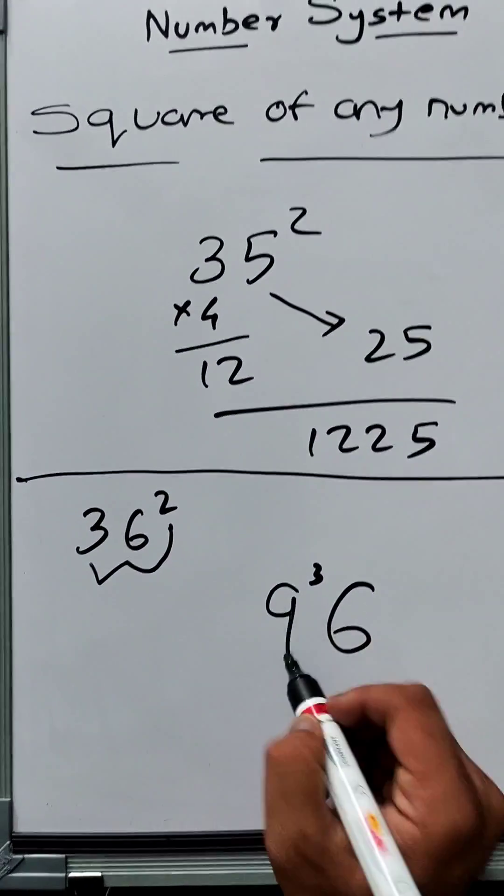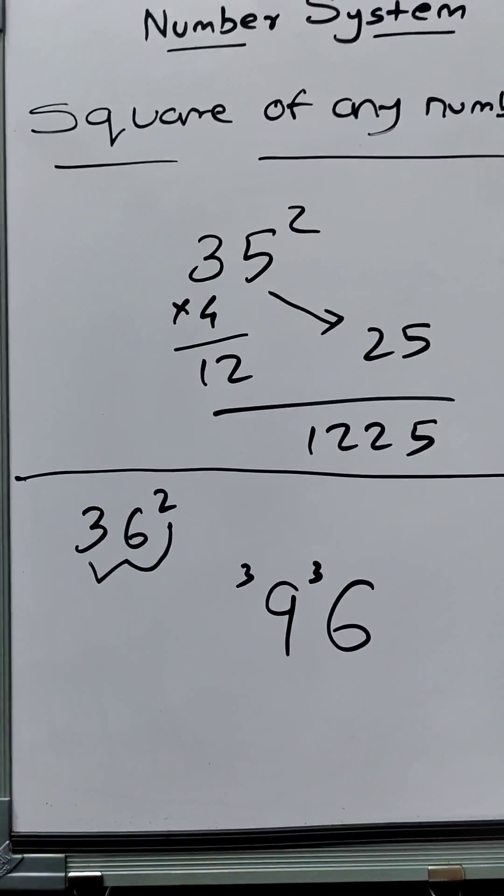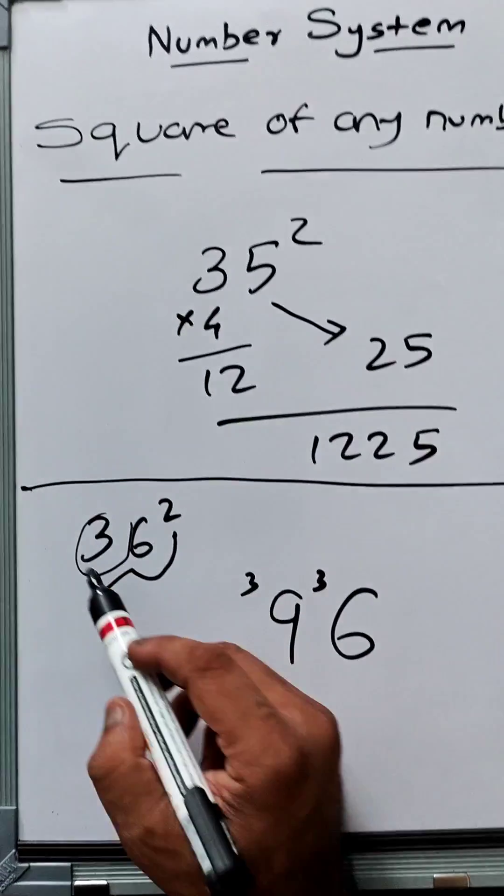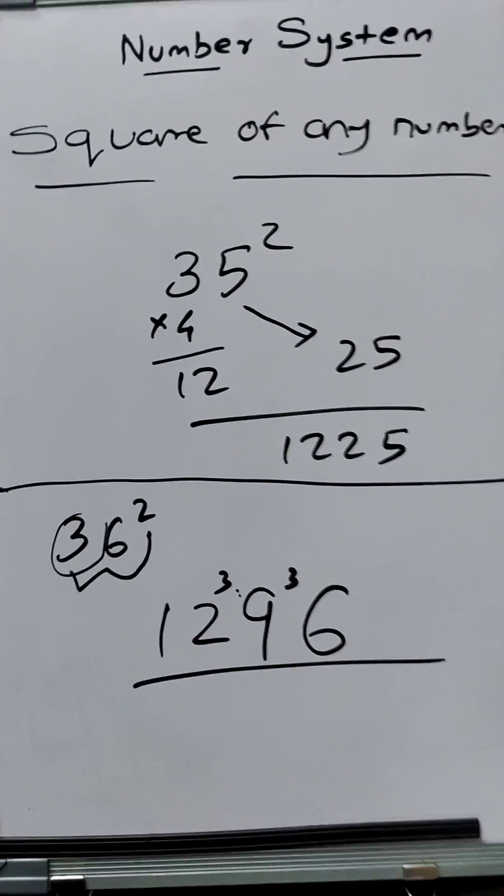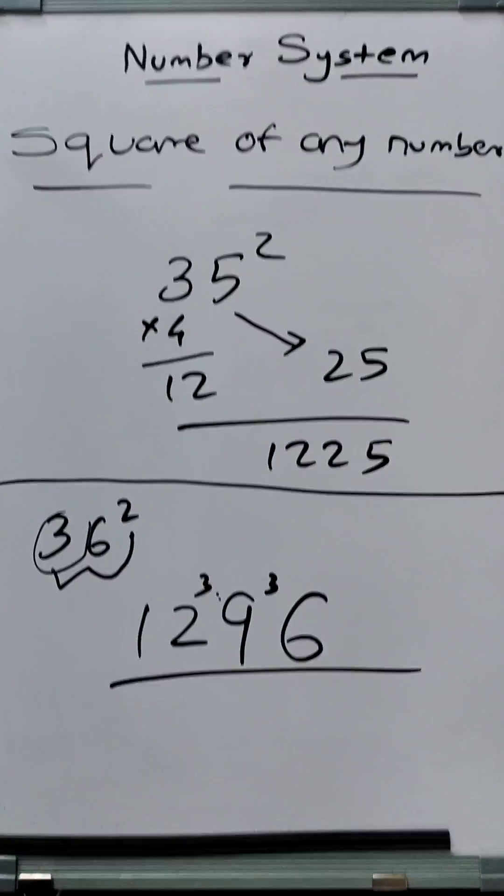Then the last step is 3 squared, which is 9. 9 plus 3 carry was 12. I write down like this. The answer is 1296.